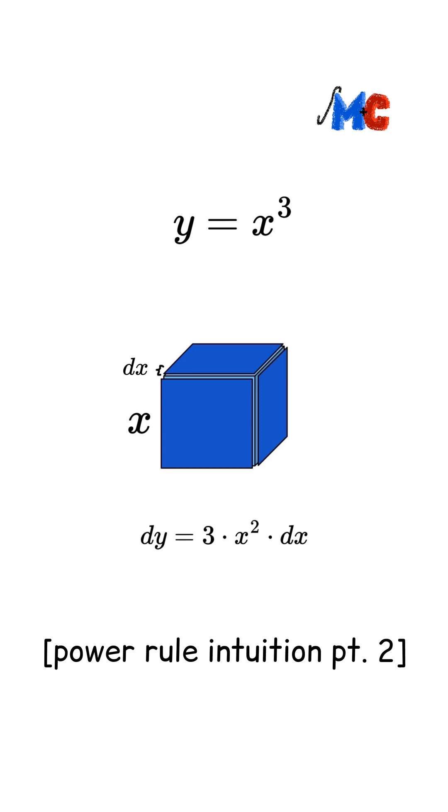And in dividing both sides of the equation by dx, we find that dy over dx is equal to 3 times x squared.